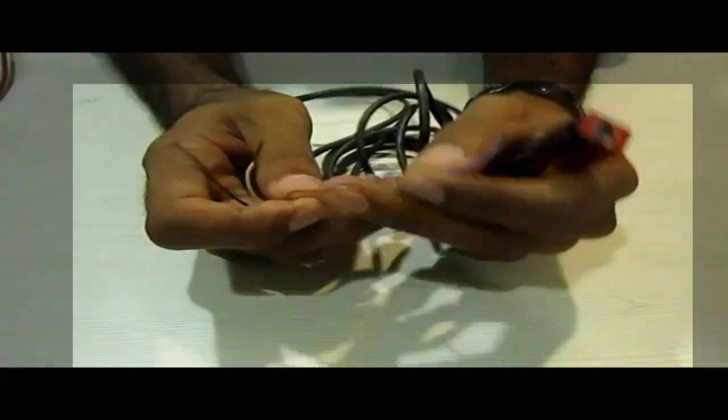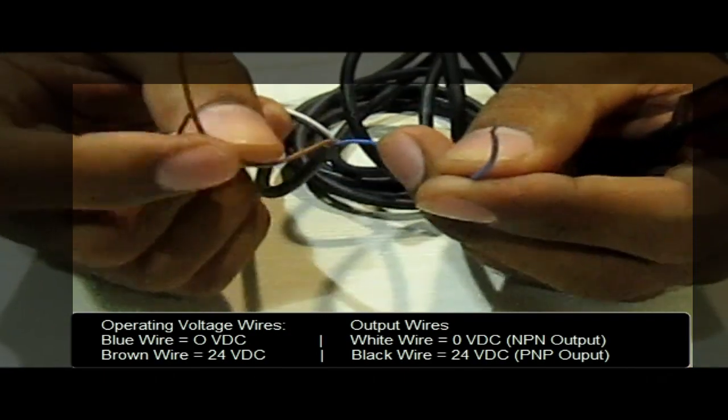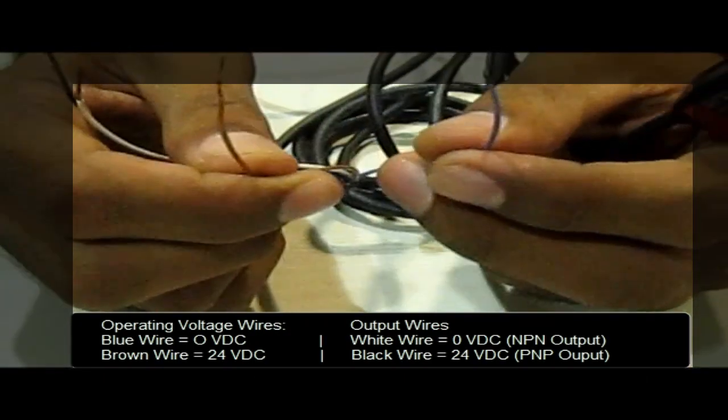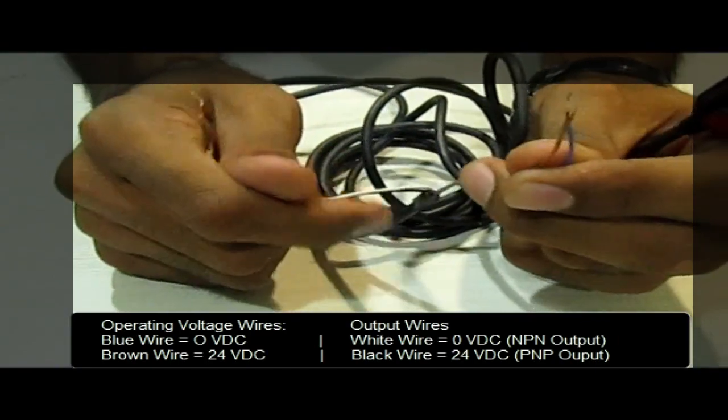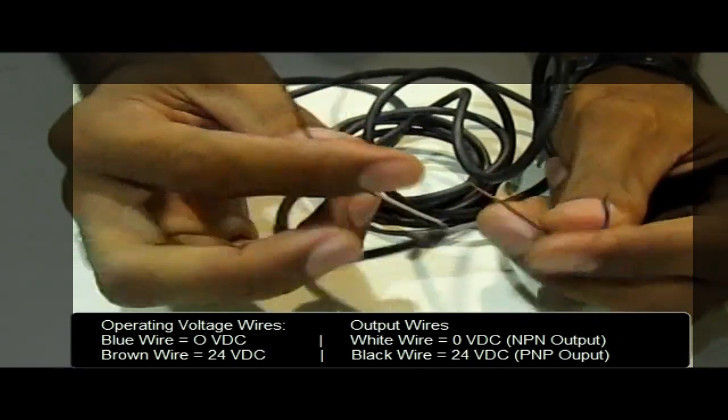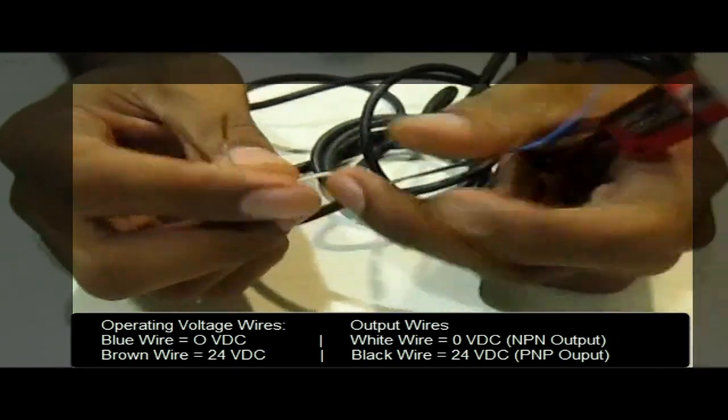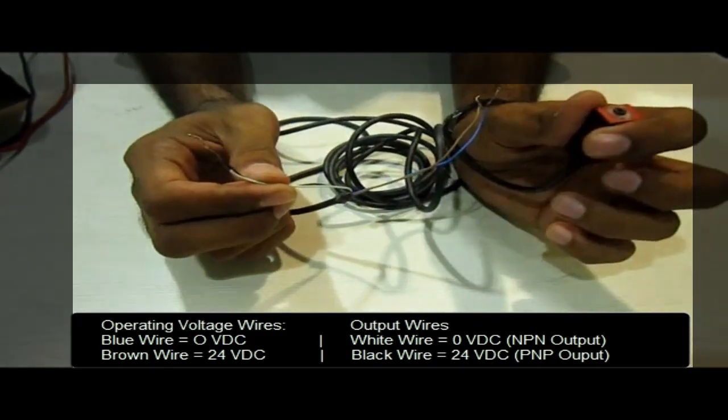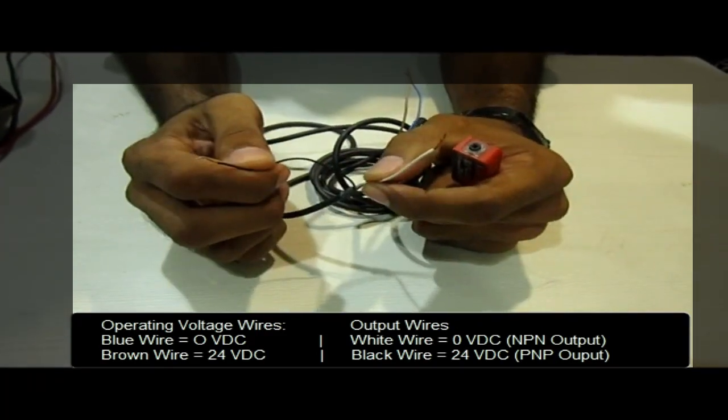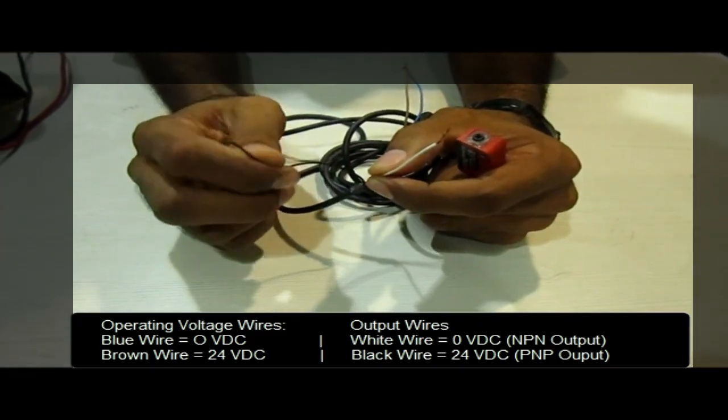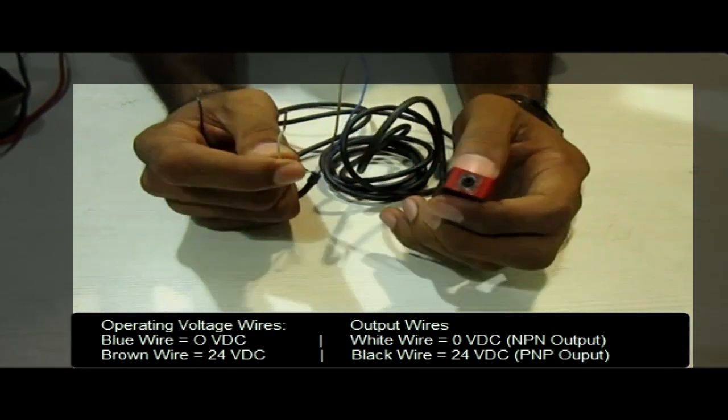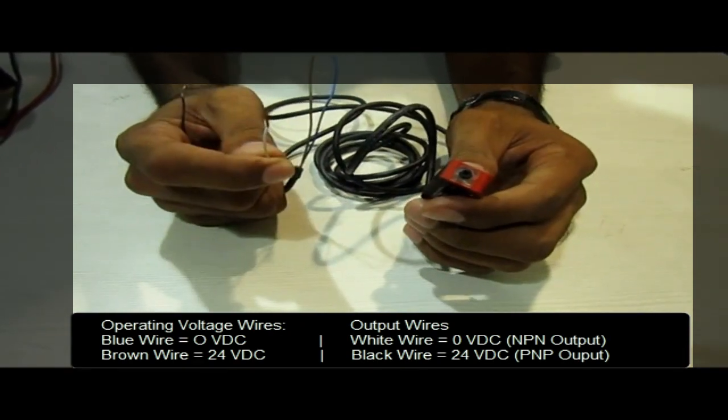As you see closely this blue wire is given 0 volt, this brown wire is given 24 volt. These are the operating voltages which will turn on the sensor. These two wires are the output wires. When the sensor detects any object this black wire will give 24 output which means it gives PNP output and this white wire will give 0 output which means it gives NPN output.